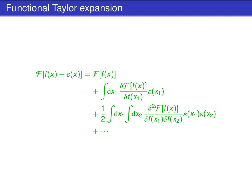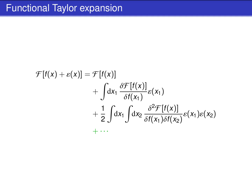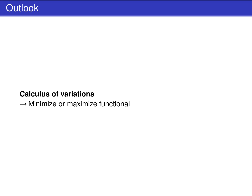Based on functional derivatives, it is possible to define a functional Taylor expansion, which is similar to an ordinary Taylor expansion. It allows expanding a functional about a certain function lowercase f of x, where the deviation is the function epsilon of x. The zeroth order contribution is simply the functional at f. The first order term is an integral over the first order functional derivative times the deviation epsilon. The second order contribution has two integrals and a second order functional derivative, and so on. Functional differentiation is highly important for the calculus of variations — a field of mathematics where the function in the argument of a functional is varied to find minima and maxima of the functional. The calculus of variations will be explained in a separate video in more detail.